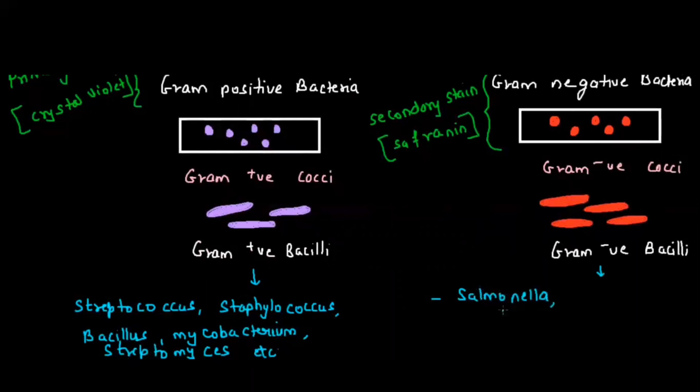The examples of Gram negative bacteria are Salmonella typhi (the typhoid bacteria), Pseudomonas, Escherichia coli (E. coli), Rhizobium, Helicobacter, etc.